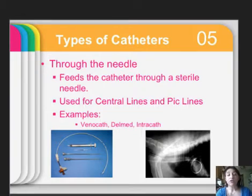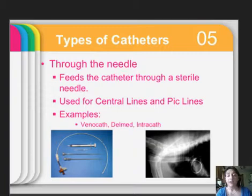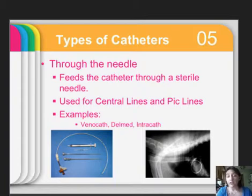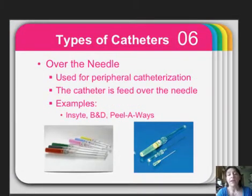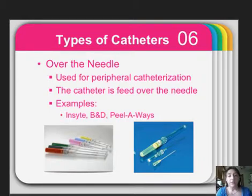There are two main types of catheters. There's through-the-needle, where the catheter is inside the needle and you feed it through a sterile needle — generally used for central lines and PICC lines. Examples include VanoCath, DelMed, and IntraCath. These are usually jugular catheters and do take some experience and skill to place. The most common catheter for peripheral catheterization is over-the-needle, where the catheter is fed over the needle. Examples include Insight, B&D, and Peel-A-Ways.